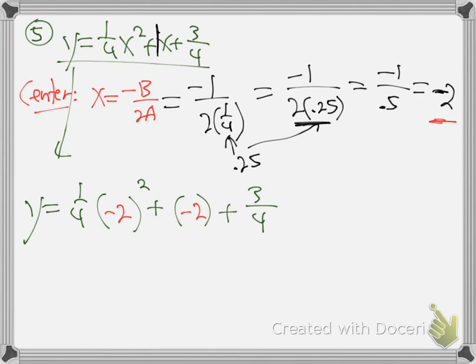So negative 2 squared is 4. Just use your calculator. Go one divided by four - literally hit those buttons. One over four, the fraction means divide. So literally hit the buttons: one divided by four, times 4, plus negative 2, plus three divided by four and hit equals. You'll get negative 0.25. So our center is negative 2, negative 0.25 - that's the center of the U shape, the vertex of the parabola.